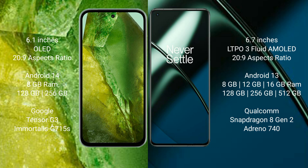Google Pixel 8a comes with 8GB RAM, 128GB or 256GB internal storage, and the Google Tensor G3 processor with Immortalis G100 GPU.